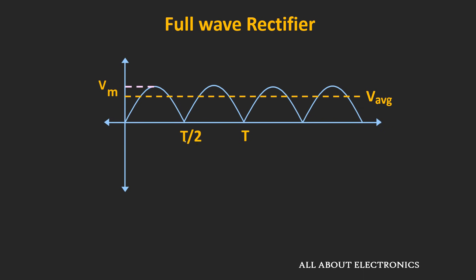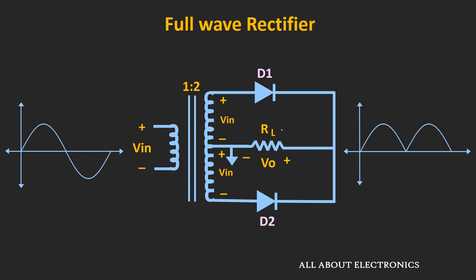As we are getting an output waveform for both half cycles, the average value of this full wave rectifier will be more than the half wave rectifier. To be precise, the average value will be equal to 2Vm divided by π, which is exactly double compared to the half wave rectifier. But here we have assumed that diodes D1 and D2 are ideal. If they are not ideal, there will also be a voltage drop across these two diodes. In that case, the average value is given by 2(Vm − 0.7) divided by π, where we have assumed the voltage drop across each diode is 0.7V. In general, the average value will be equal to 2(Vm − Vt) divided by π, where Vt is the threshold voltage for each diode.